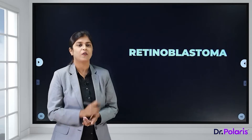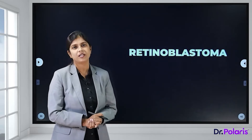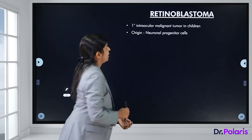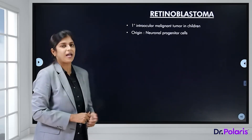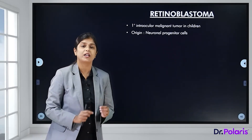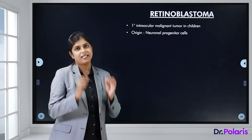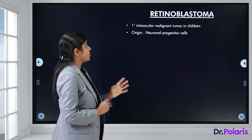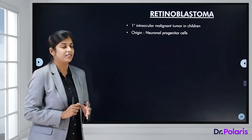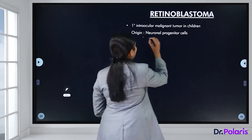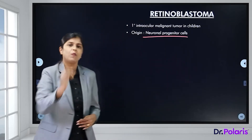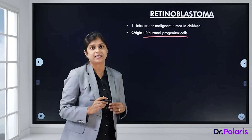In this session, we will talk about retinoblastomas. Retinoblastoma is a primary intraocular malignant tumour in children. The origin of this tumour is the neuronal progenitor cells.